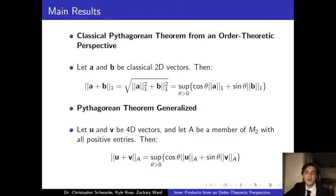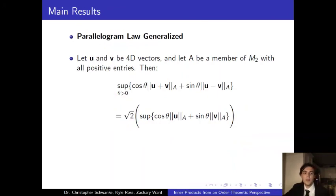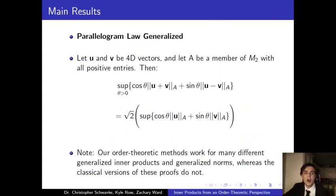As an example, here is the new and improved parallelogram law, both in the classical version and also a generalized version. And this is the important part to take away from all this. Our order theoretic methods work for many different generalized inner products and generalized norms, whereas the classical version of these proofs do not. This means that the generalized norms and inner products don't have to be just 4D vectors and 2 by 2 matrices, it could be other mathematical objects. Plus, the new generalized versions help solve the problem of the classical versions not working in higher abstract settings, where certain operations may not work.